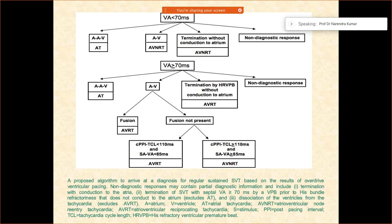About the accessory pathways, how are we going to differentiate these, whether it is AVNRT or AVRT?